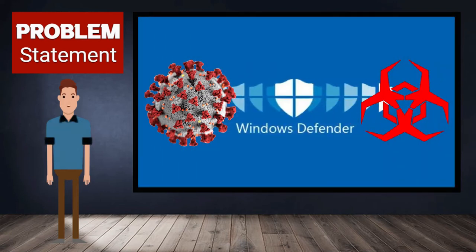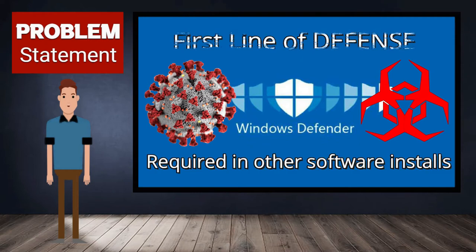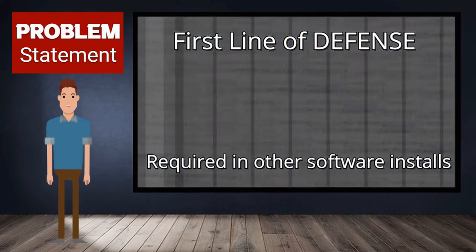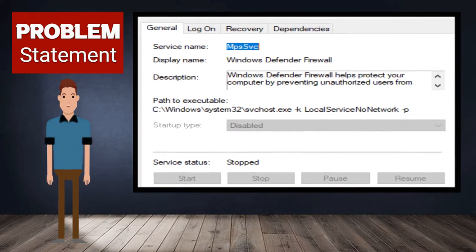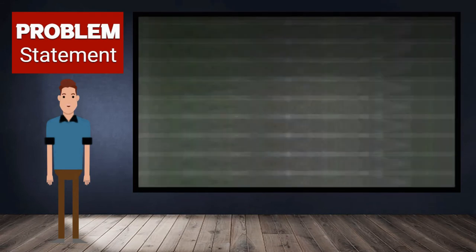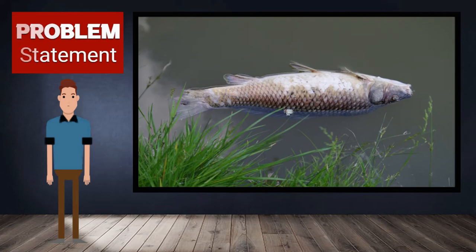Understand that Windows Defender is the first line of defense, and at times a requisite as well to install other services or software — but we'll show that on another quick tip series. The real issue is that when you need to enable the Windows Defender service, all its options are grayed out when you run services.msc, and there's no way to enable and start the service. Users are dead in the water, so to speak.